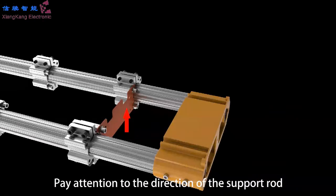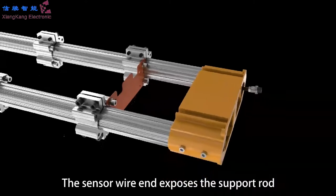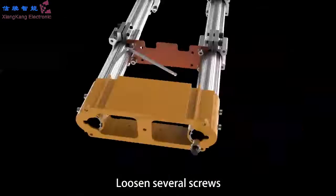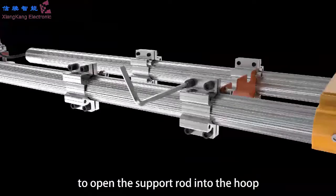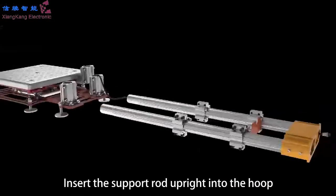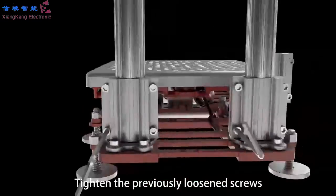Pay attention to the direction of the support rod. The sensor wire end exposes the support rod. Loosen several screws to open the support rod into the hoop. Insert the support rod upright into the hoop. Tighten the previously loosened screws.